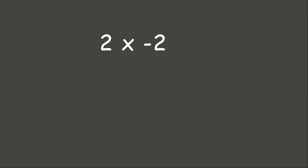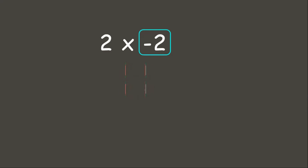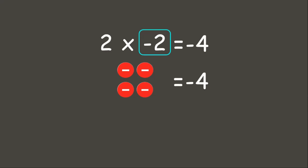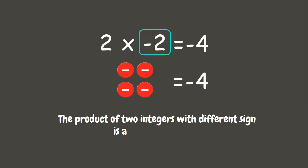Awesome job! Now let's try a different example. This time, we will try to multiply two integers with different signs. We have positive 2 times negative 2. Let us try to solve this one using our counters first. Our multiplicand is positive 2, so let us put two positives. We need to make two groups of two positives, so we have four positives. Again, if our multiplier is a negative integer, we need to flip over our counters and get the opposite sign. Since these are all positive, we are going to make them negative. Therefore, our answer is negative 4. When we are multiplying two integers with different signs, the answer is a negative integer.